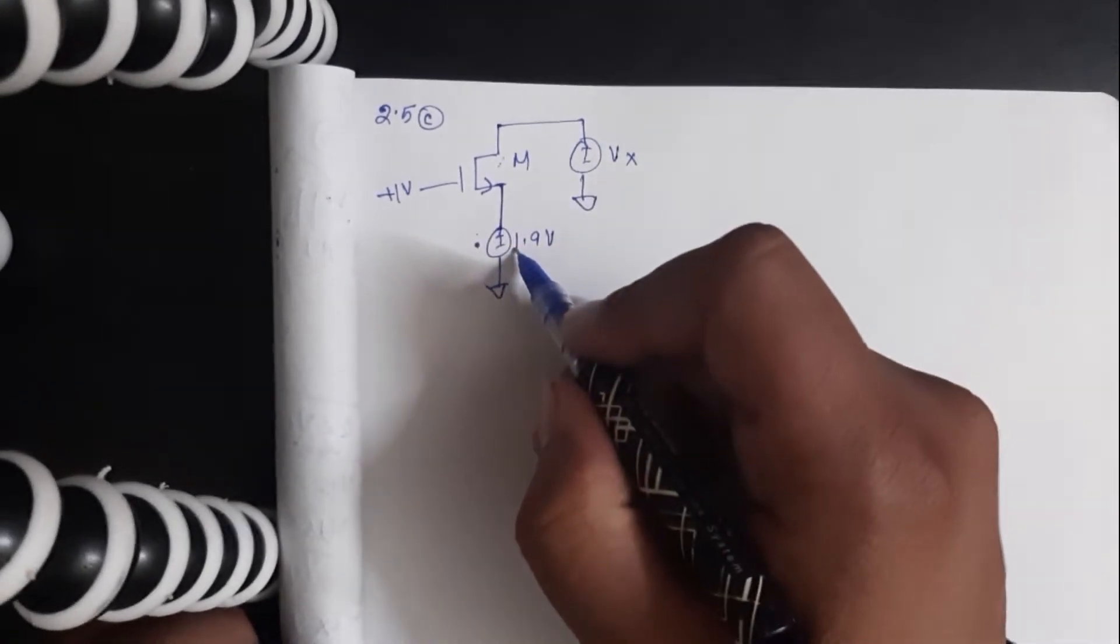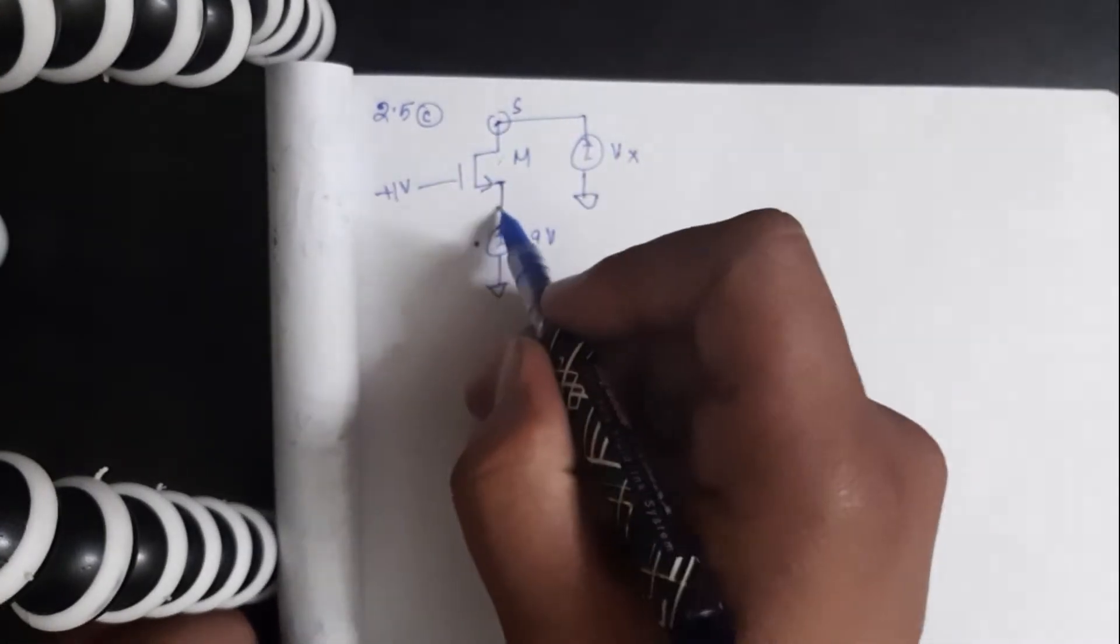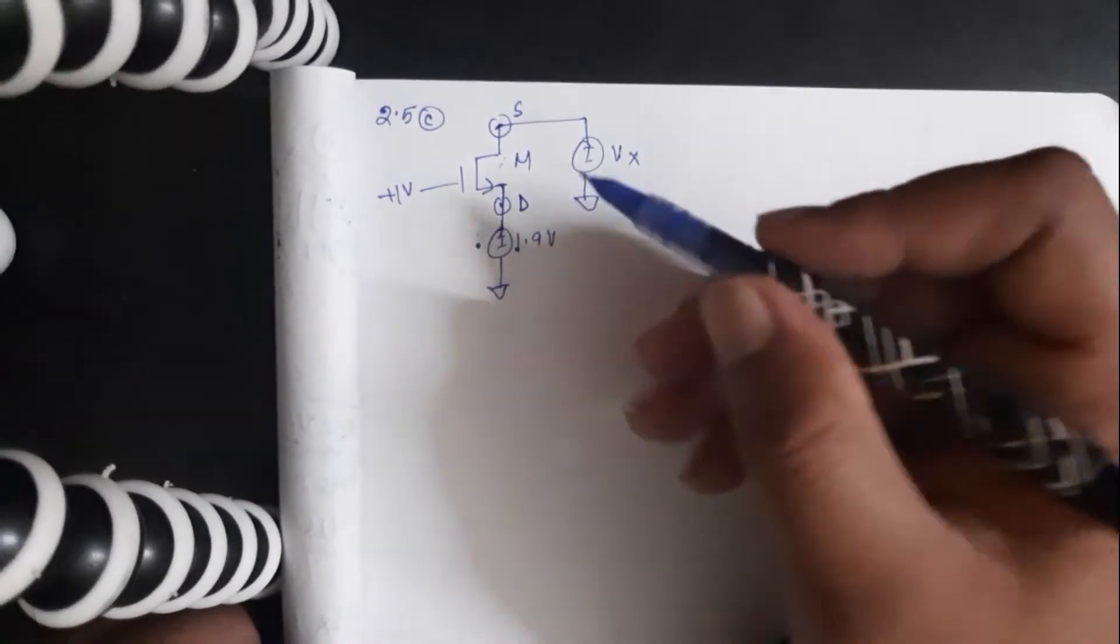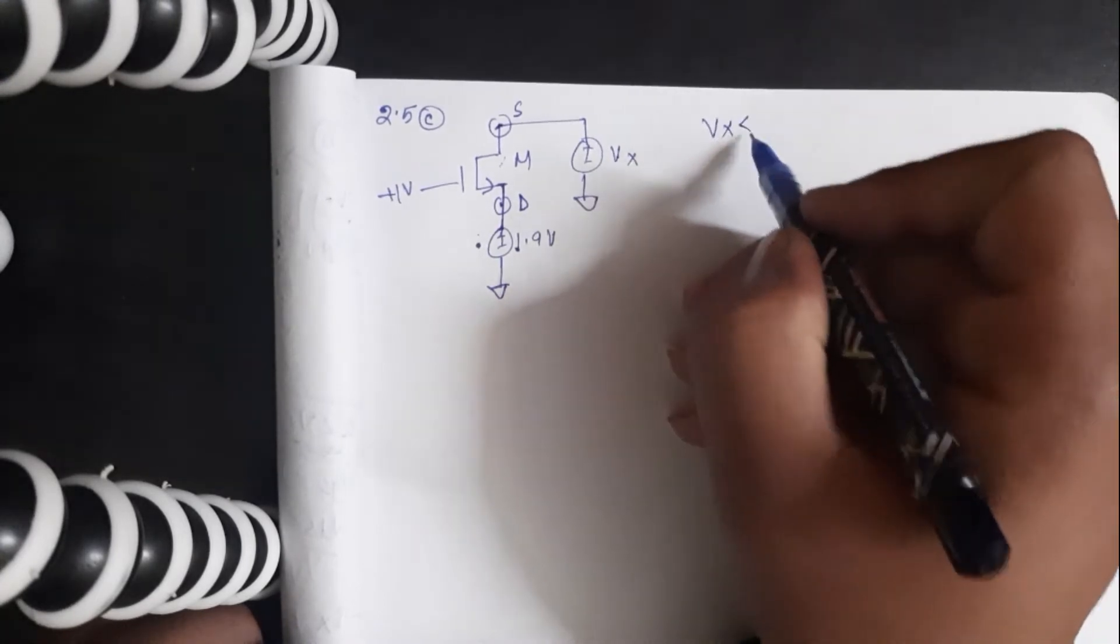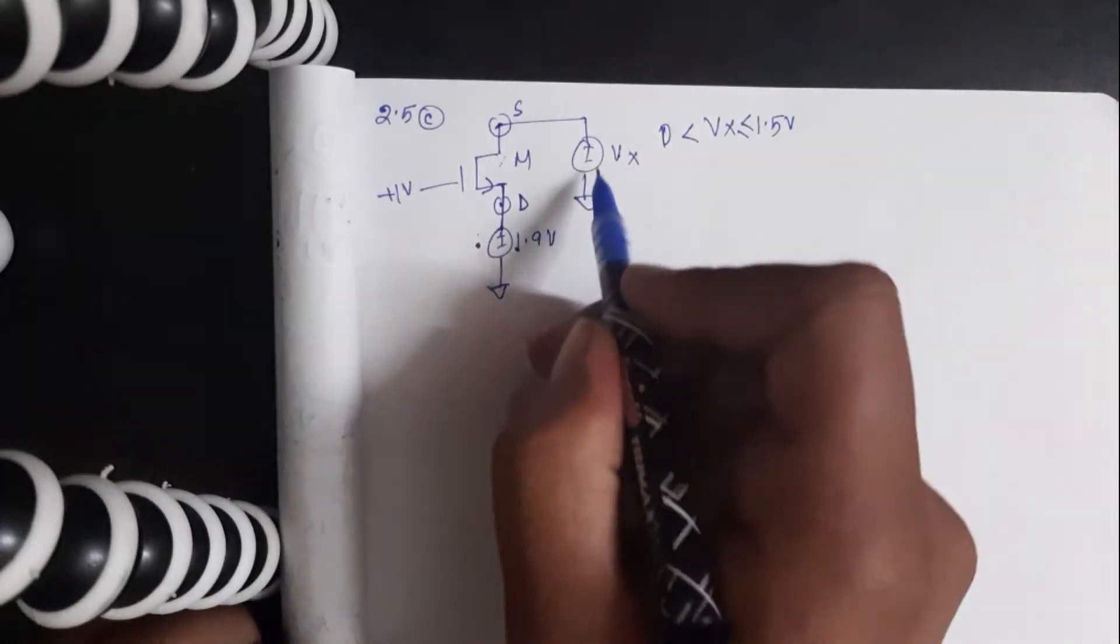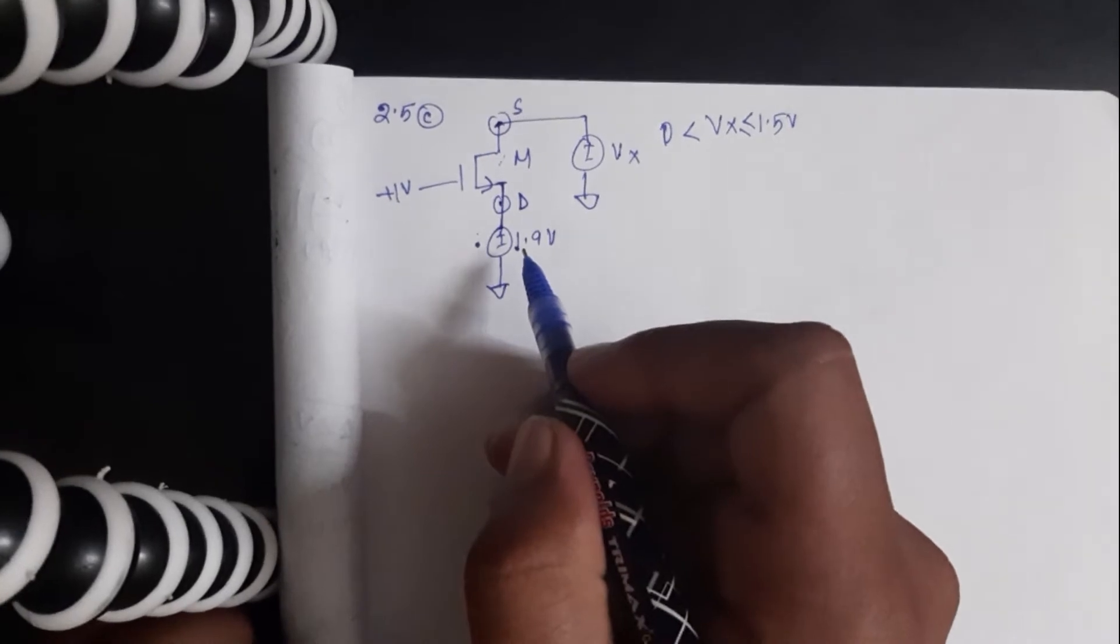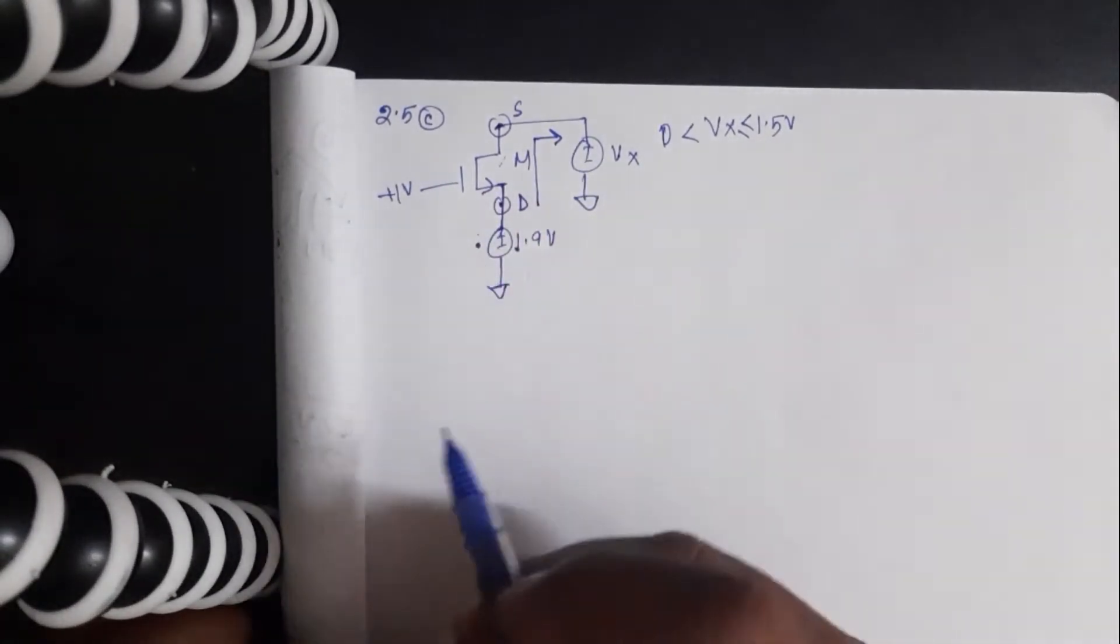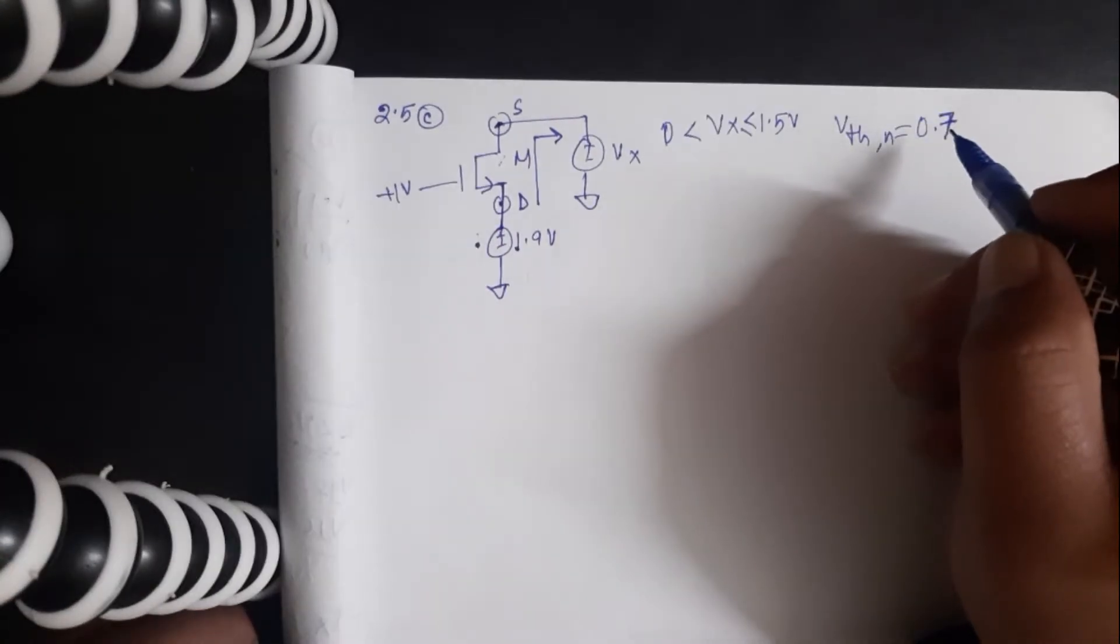When VX is less than 1.9 volts, this should be the source, this should be the drain, and vice versa. Since VX does not go above 1.5, for our range of voltages this node will be the source, this node will be the drain. So the current will flow from drain to source since it's an NMOS.